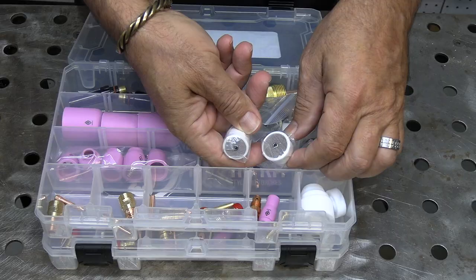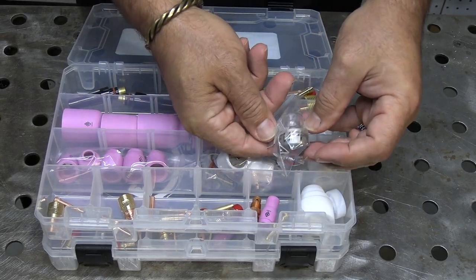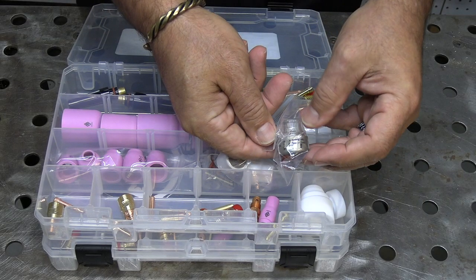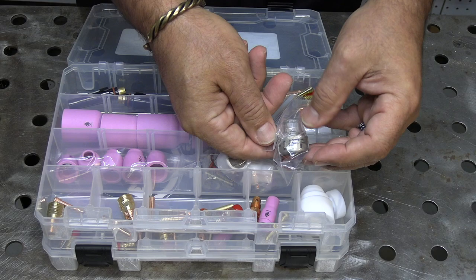The clear version of this number 12 cup is also included with a titanium shield on it. You can use it with or without the titanium shield. It's great for your average everyday fillet welds with a long stick out where you can see everything that's going on.